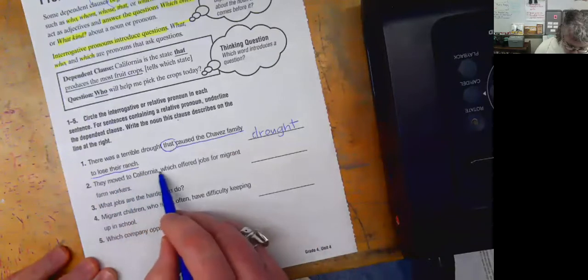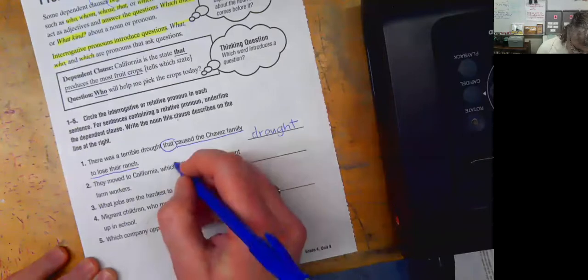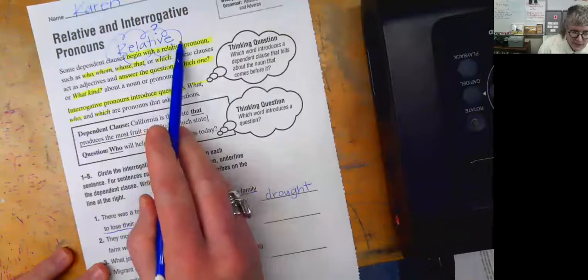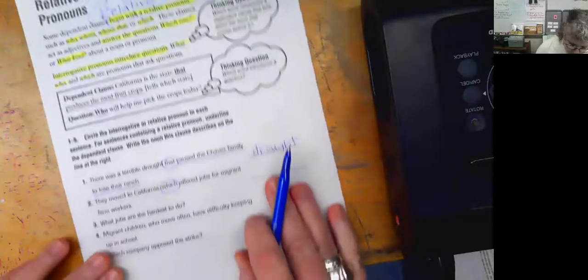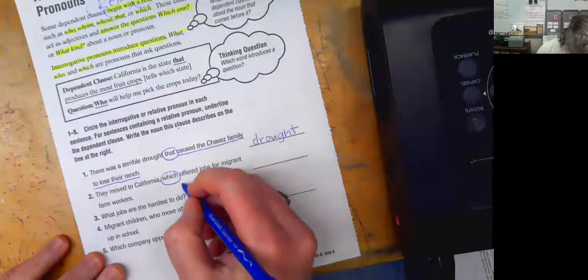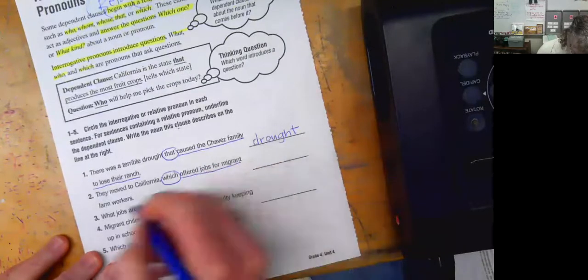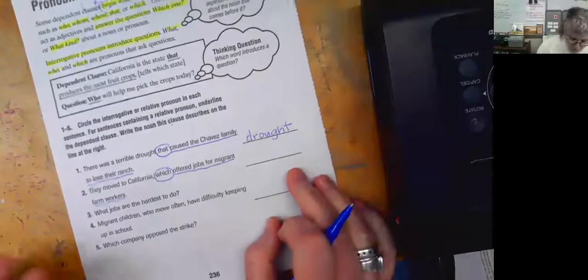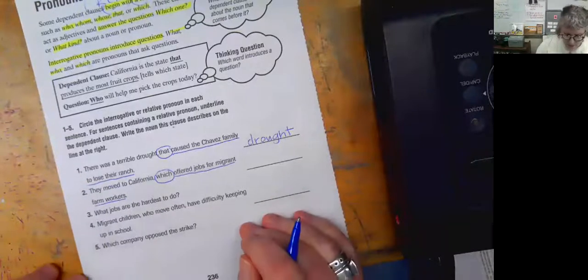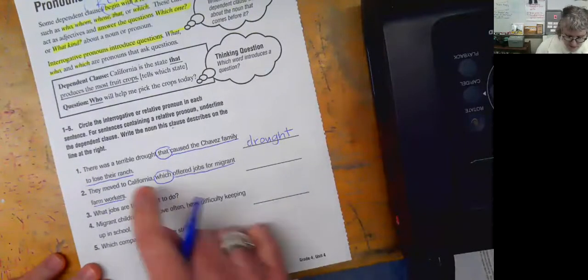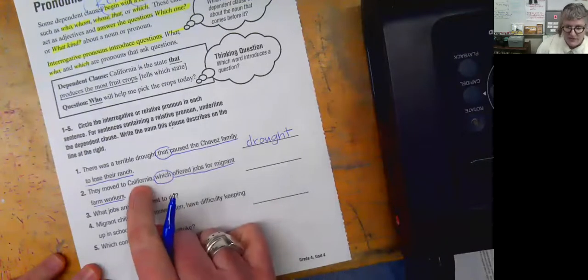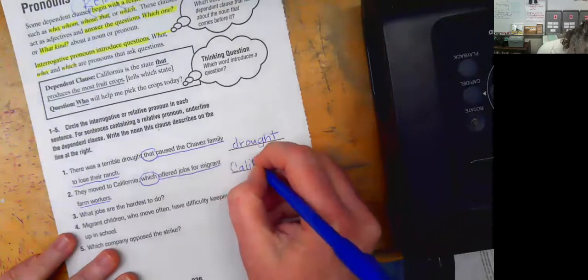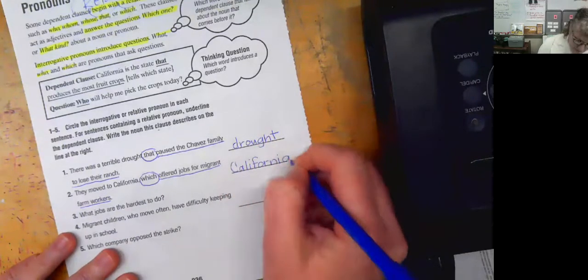They moved to California, which offered jobs for migrant farm workers. Which is one of the words that's up here at the top, right up here. Booyah. And our clause is offered jobs for migrant farm workers. And we're going to ask ourselves, which offered jobs for migrant farm workers? They're asking kind of like which state. And so our answer is going to be California. It's kind of tricky, huh?